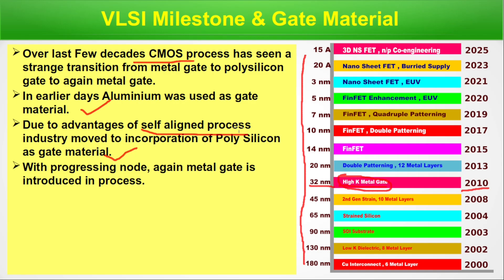The self-aligned process is one reason industry moved to polysilicon as gate material, but there are some other reasons also, which we will discuss in later slides. With progressing nodes, a point came when polysilicon was no longer sufficient, and then again industry moved to metal gate. In today's episode, we will discuss these two transitions and the reasons behind them.